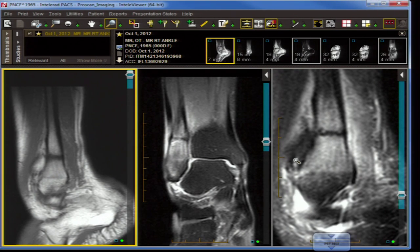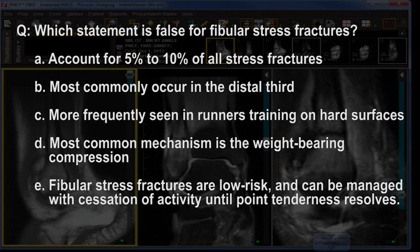Why don't we try another question? Which statement is false for fibular stress fractures? A: they account for 5 to 10 percent of all stress fractures. B: most commonly occur in the distal third of the fibula. C: more frequently seen in runners training on hard surfaces. D: most common mechanism is due to weight-bearing compression. Or E: they are low risk and can be managed with cessation of activity until the point of tenderness resolves.